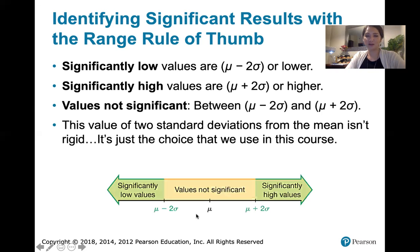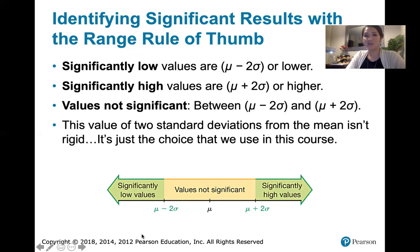Looking at our graph: if this is the mean, and you're within two standard deviations — within this middle range — those values are not considered significant. Significantly low values are the mean minus two standard deviations or lower, on the far left. And significantly high values are the mean plus two standard deviations or higher, on the far right.